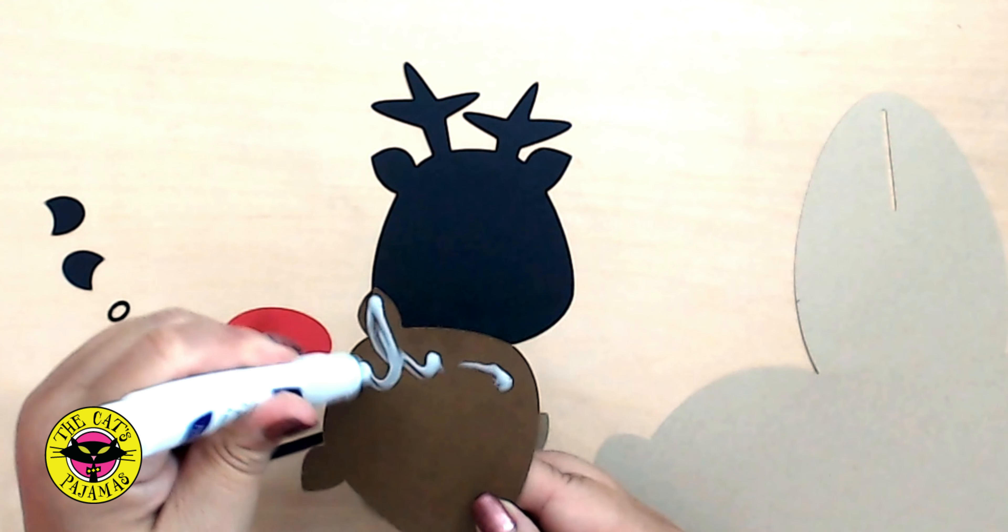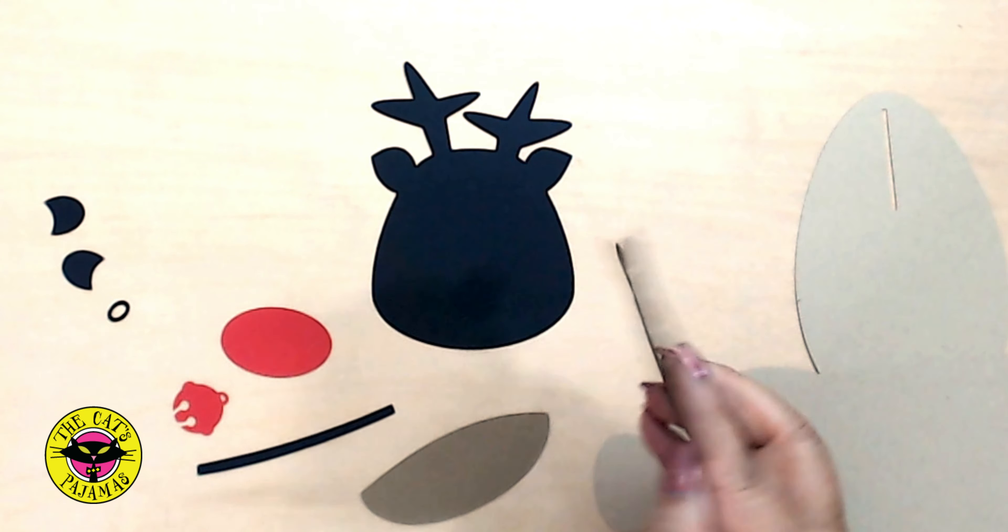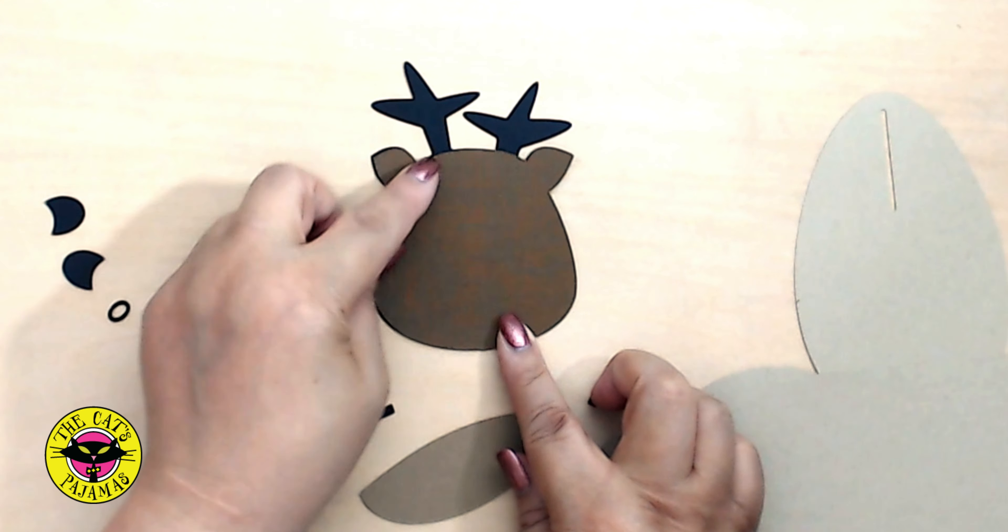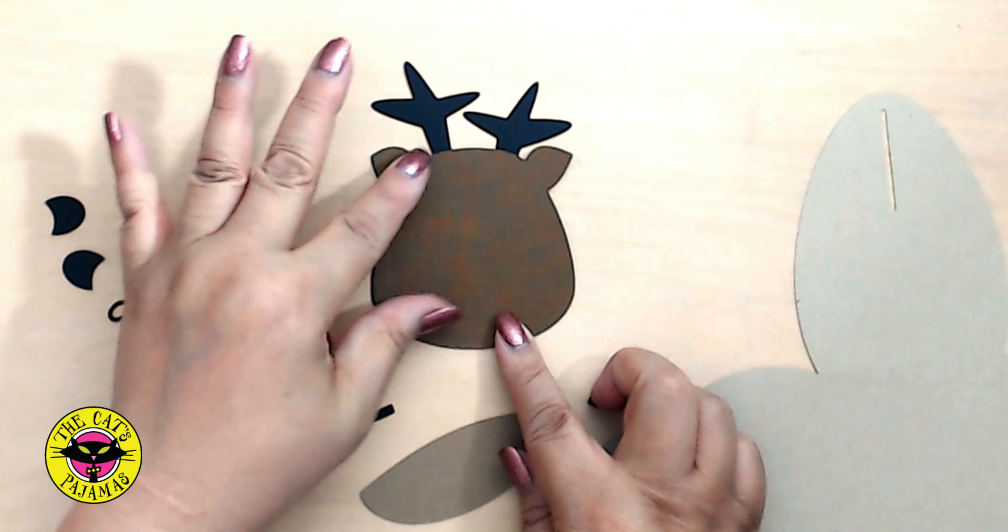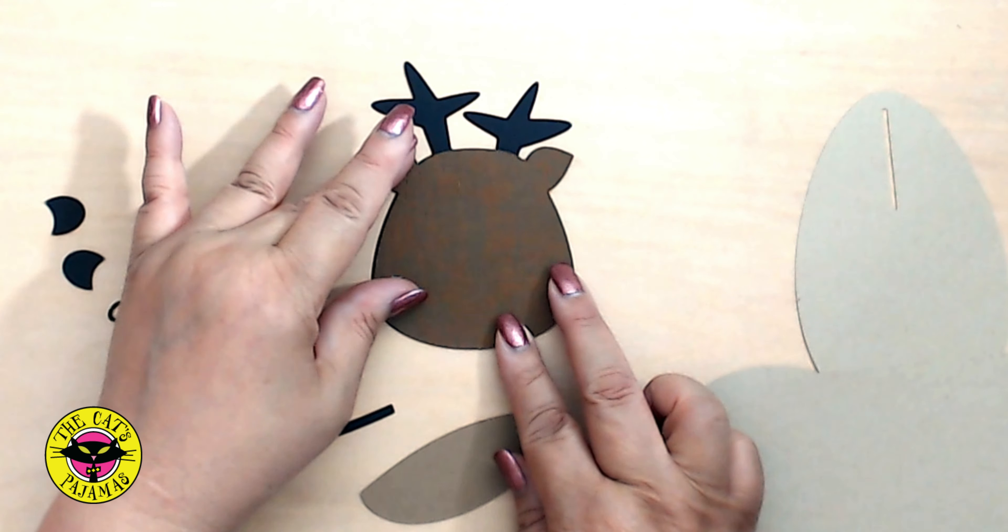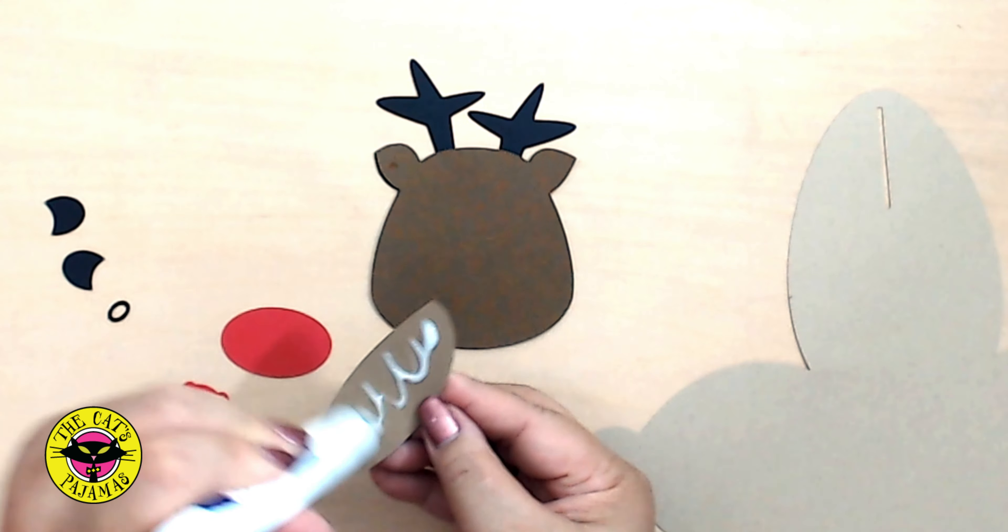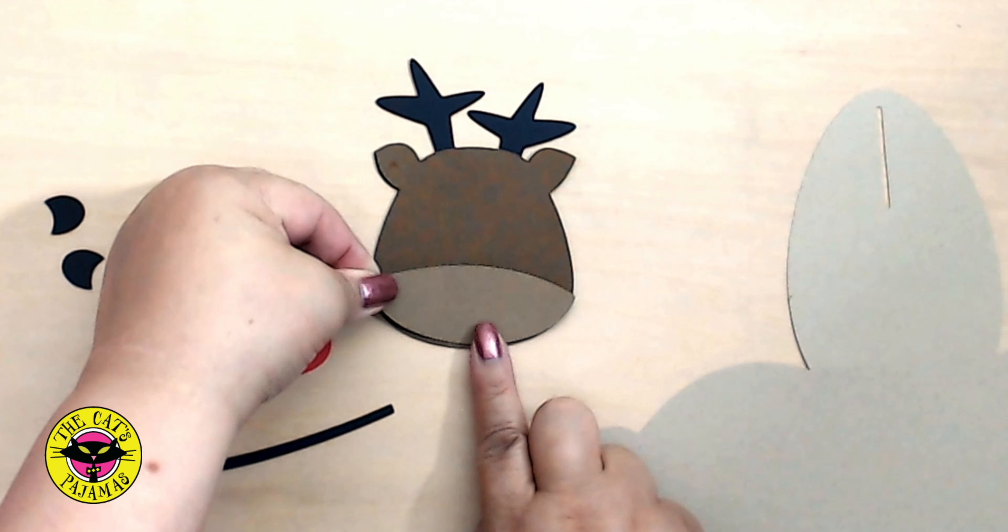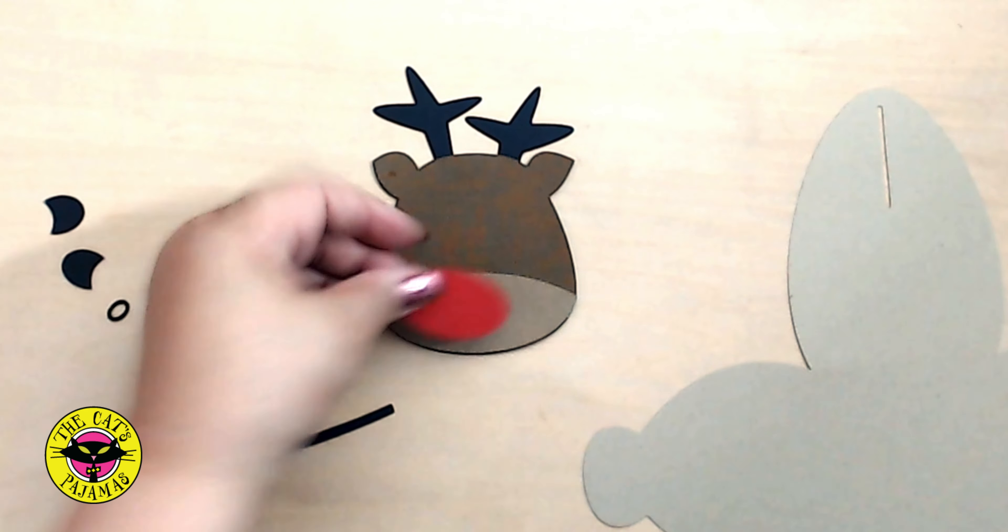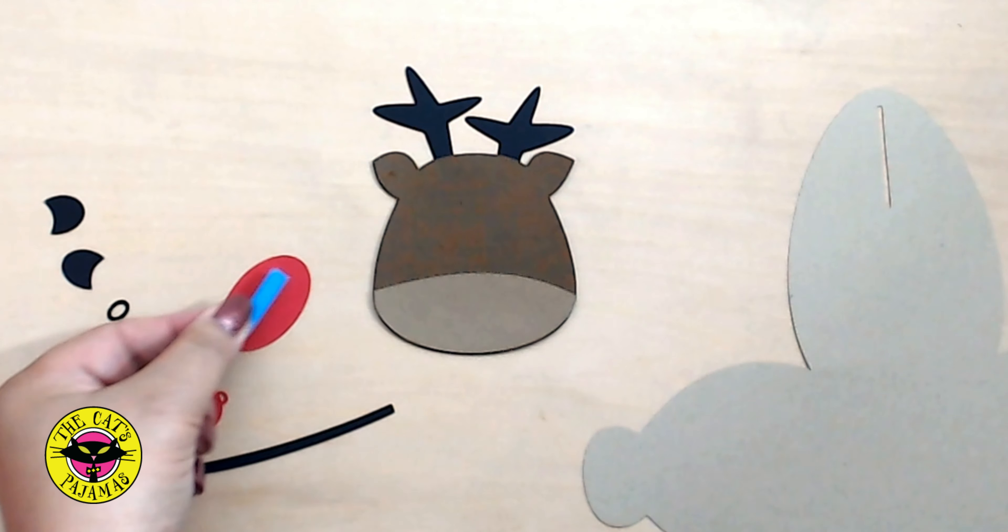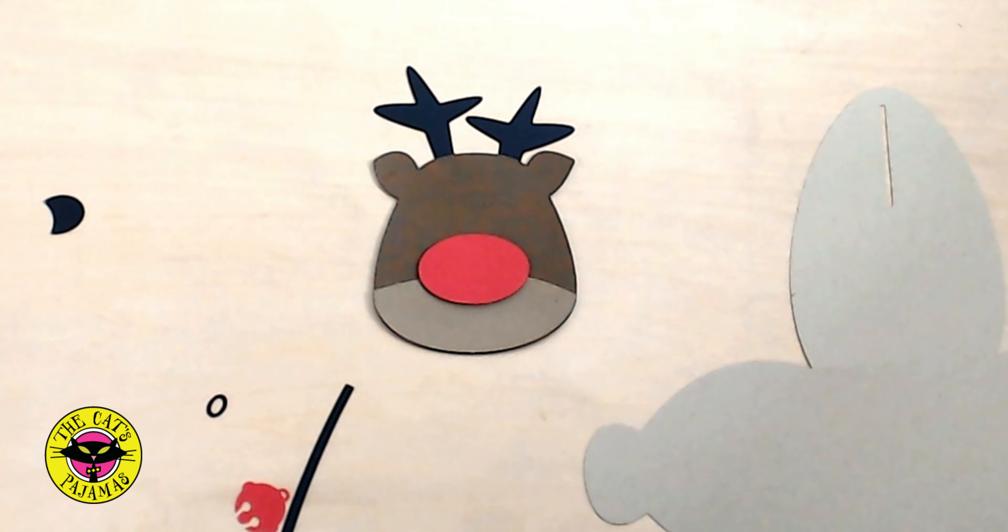Start with the top of the reindeer and attach it to the base with glue, lining up the ears and under the antlers. I like to use glue just because it gives me a little open time to move things around and line things up properly before it sets. Now I'll add his muzzle to the bottom and finally his nose. I think I'm going to pop that up with a little bit of foam tape and glue on his eyes.